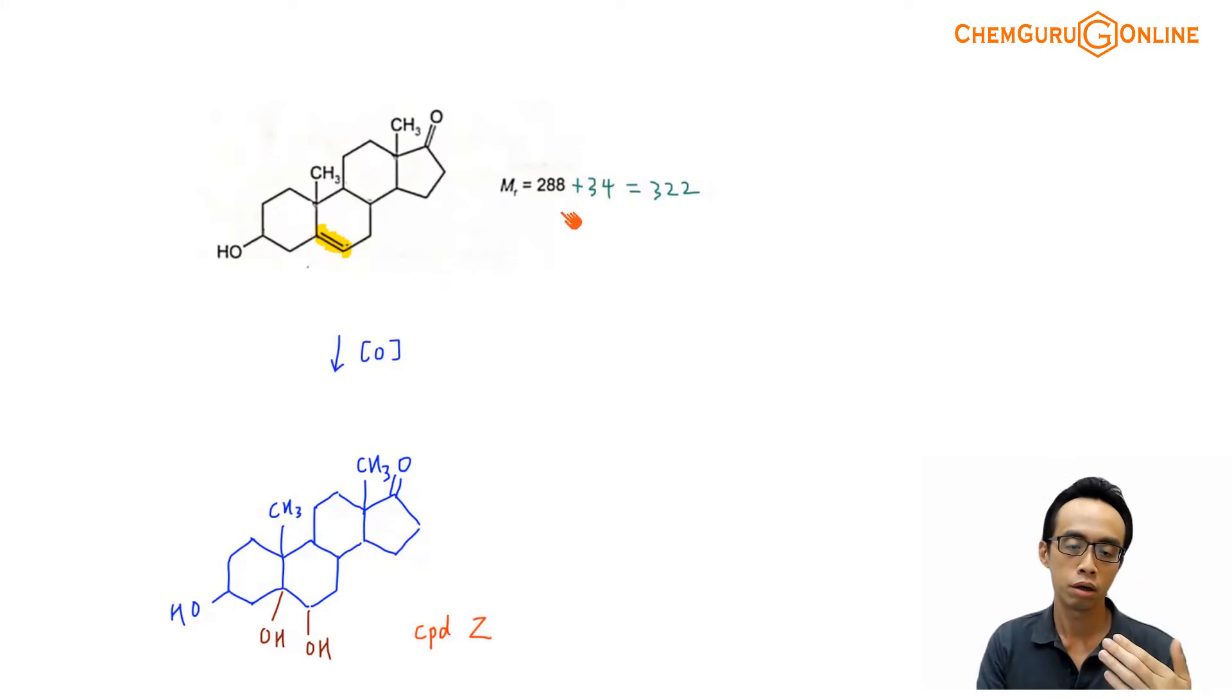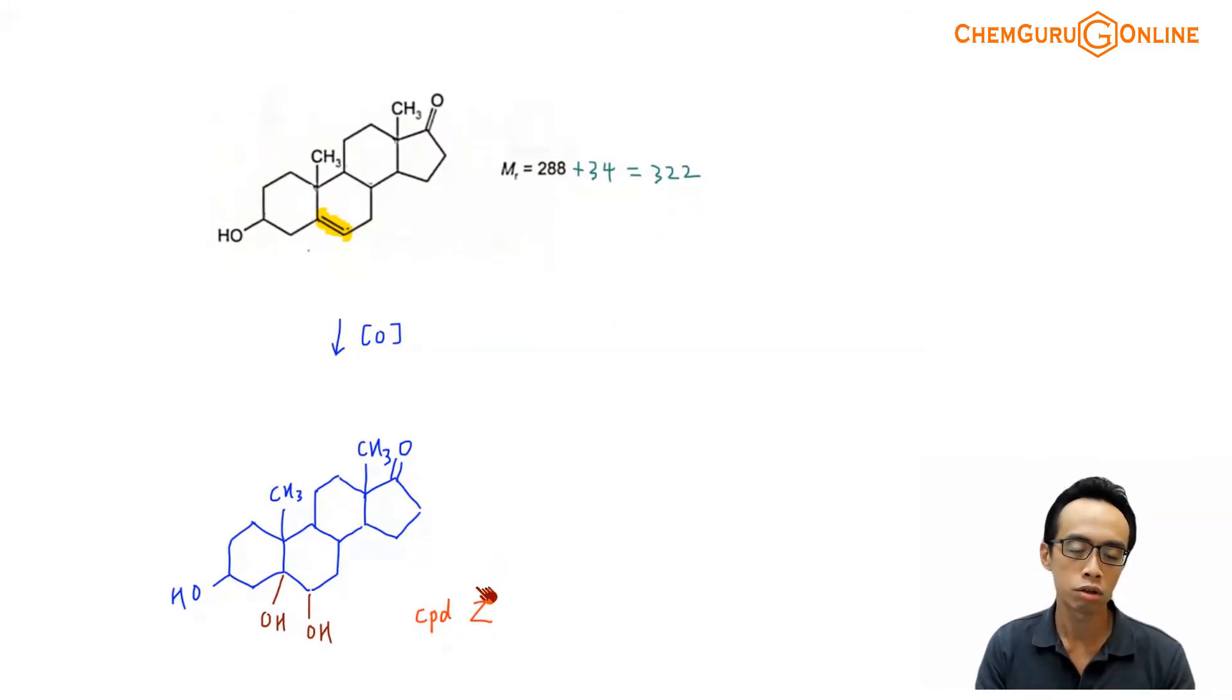288, which is the original molar mass for my compound. And when you add 34, which means that I'm effectively adding two OH groups, the molar mass will increase to 322. And very nicely, this will correspond to the molar mass for my compound Z. So what this would mean is the mild oxidation of my alkene will be the only reaction taking place, and I'll be able to form the diols here. I just remove the double bond, alkene, and I add two OH groups to each of these carbon. So this is the expected product that I'll have.